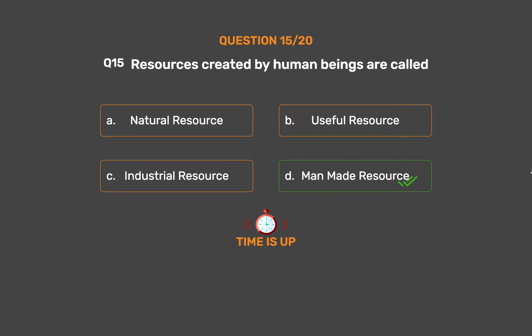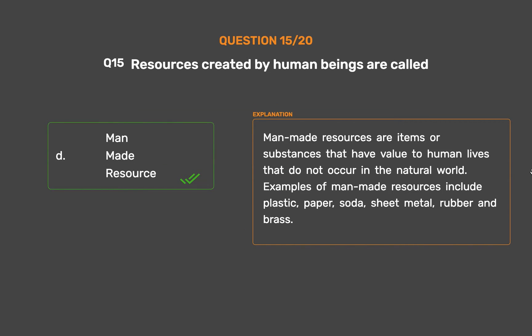Manmade resources are items or substances that have value to human lives that do not occur in the natural world. Examples of manmade resources include plastic, paper, soda, sheet metal, rubber, and brass.